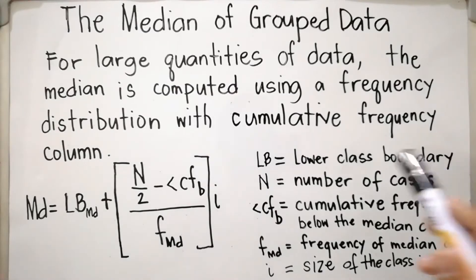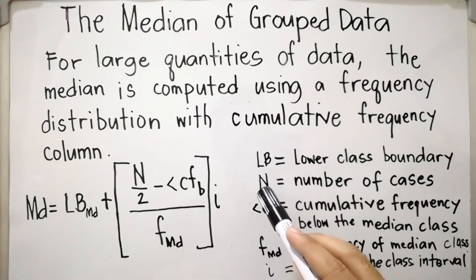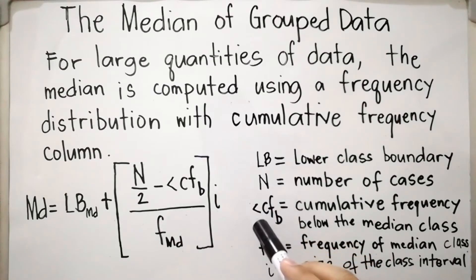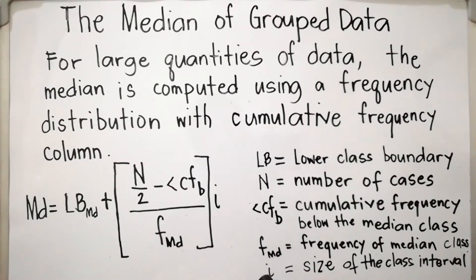Where LB means the lower class boundary. N is the number of cases or observations. Less-than CF sub B is the cumulative frequency below the median class. F sub MD is the frequency of the median class. And I is the size of the class interval.